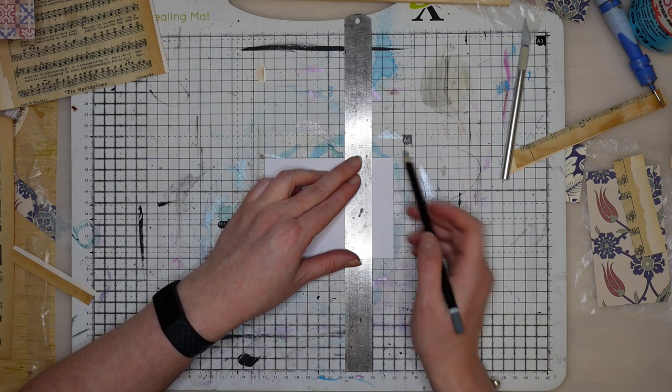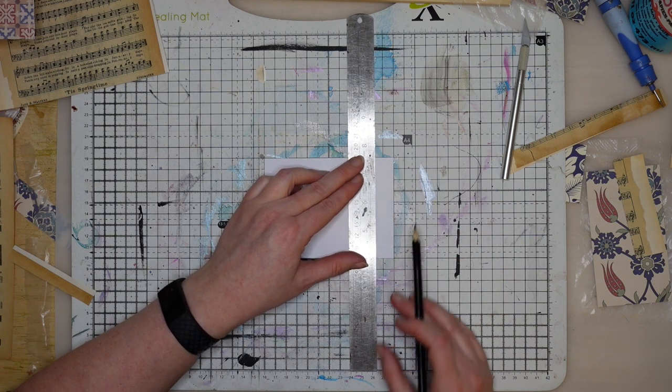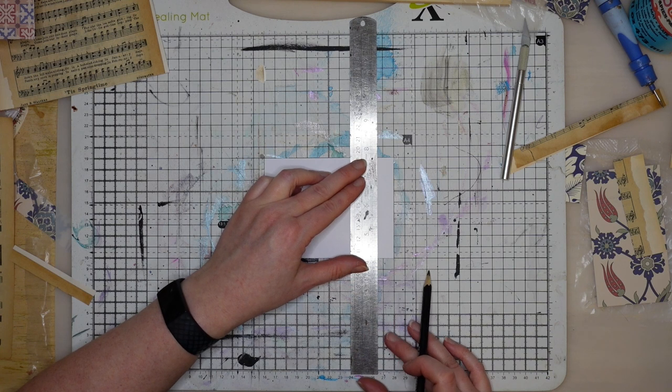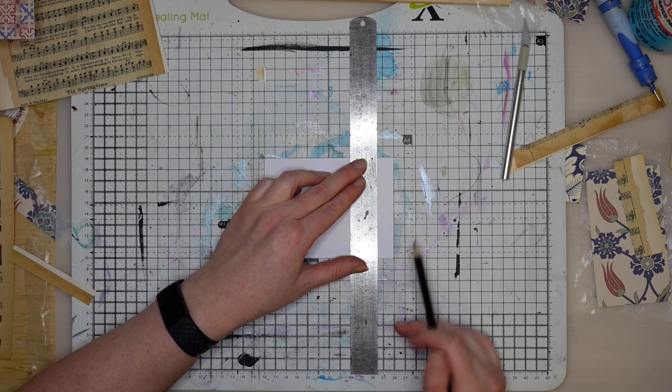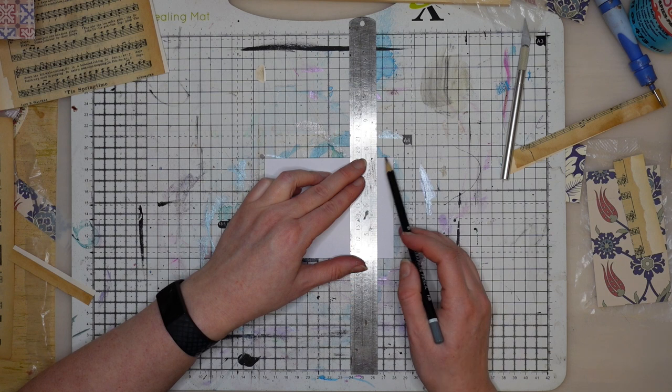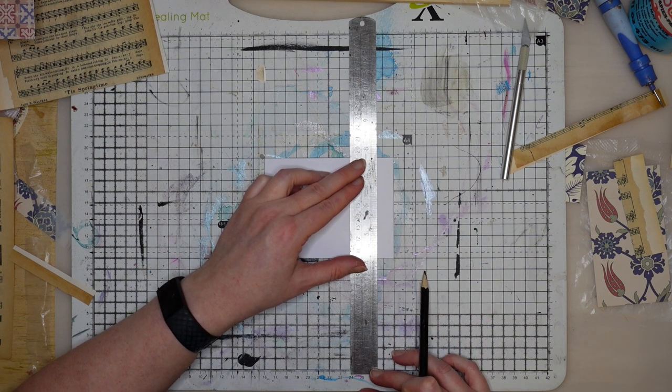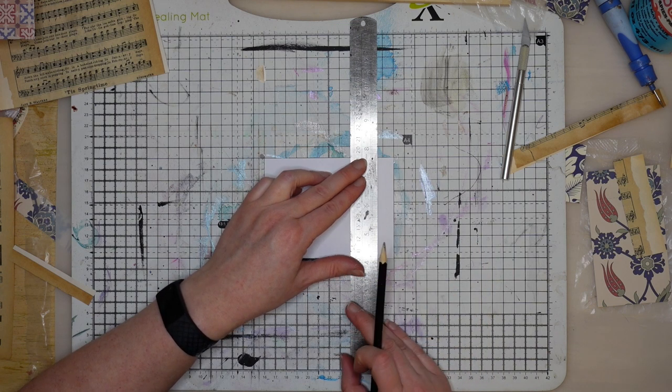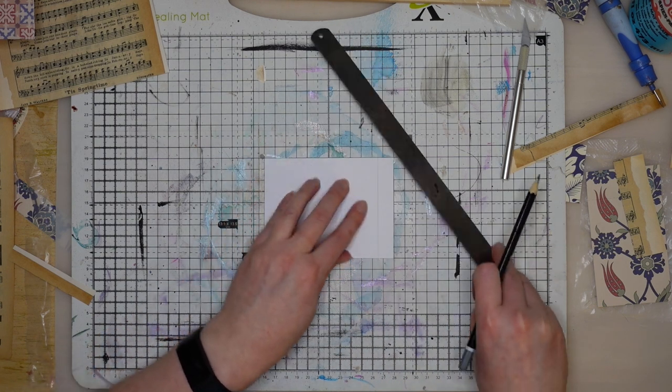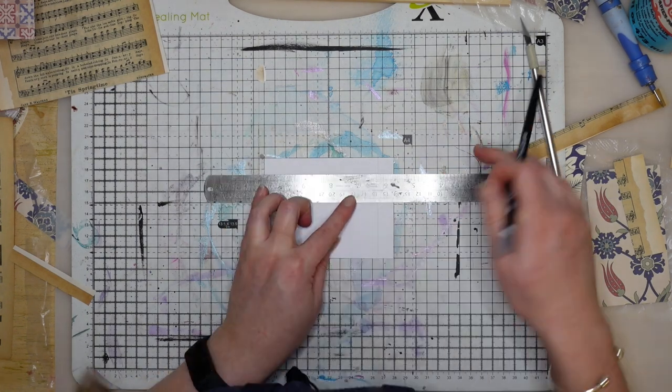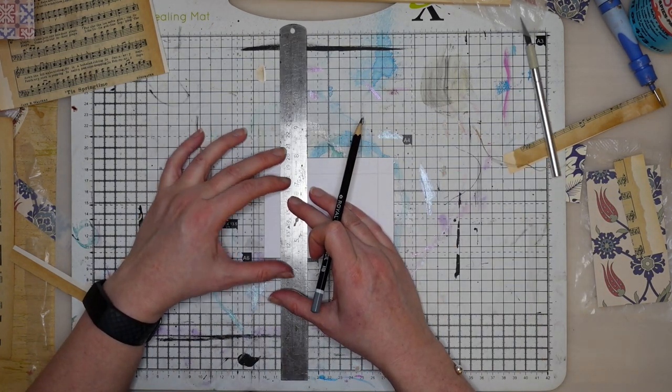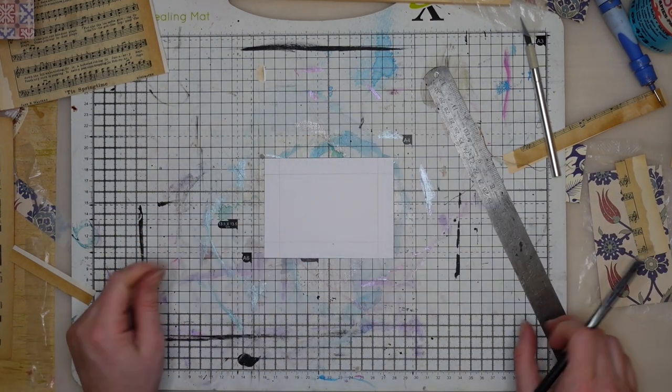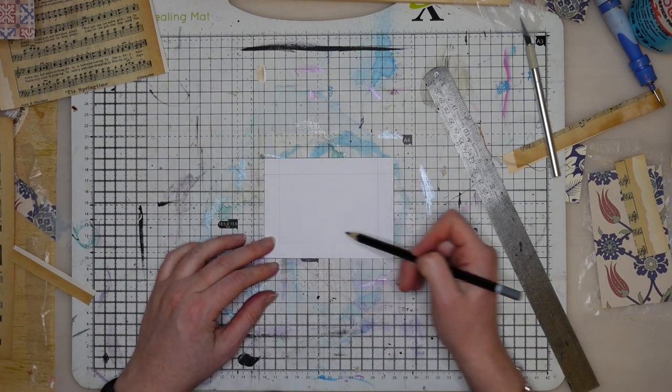Then I'm going to do a thin pencil line on the back and we're going to do that all the way around. So then when you've drawn your lines then you can cut the window out.